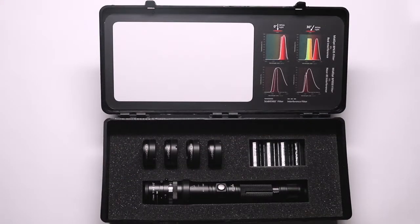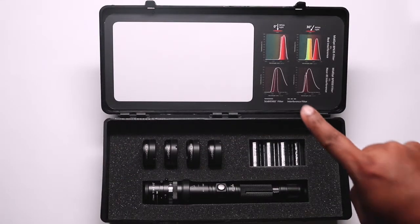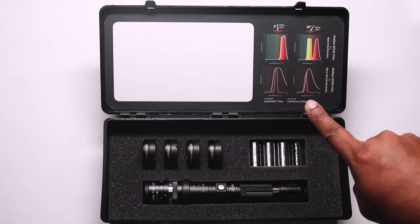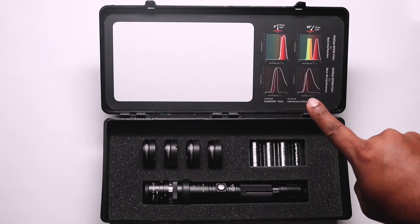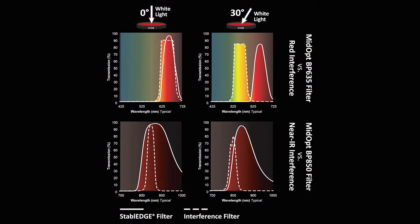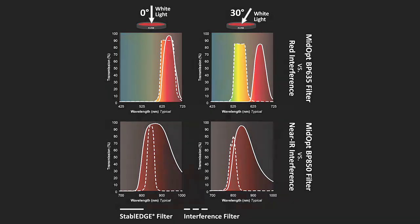Notice there is an illustration on the interior lid that shows what happens to the performance of the pass band as the angle of light passing through the filter increases. The competitor's dichroic filter pass band shifts to a lower wavelength, while the Mid-Opt stable edge filter pass band remains constant.